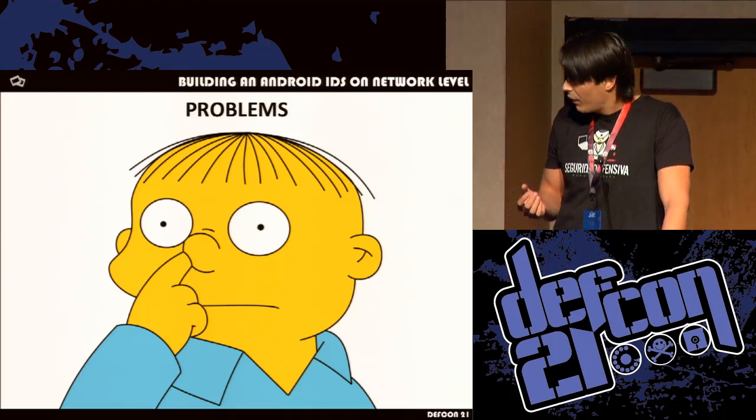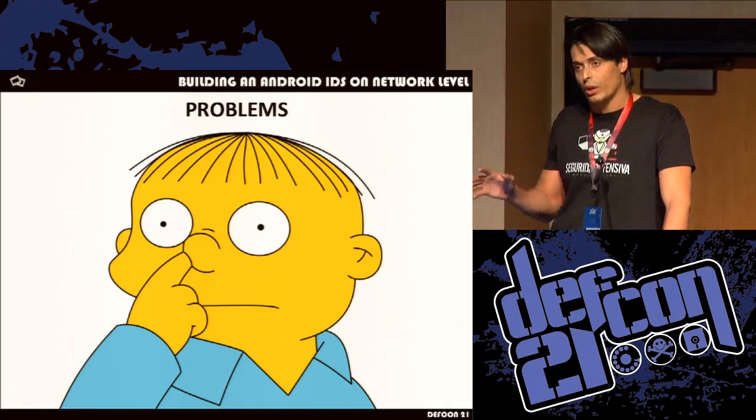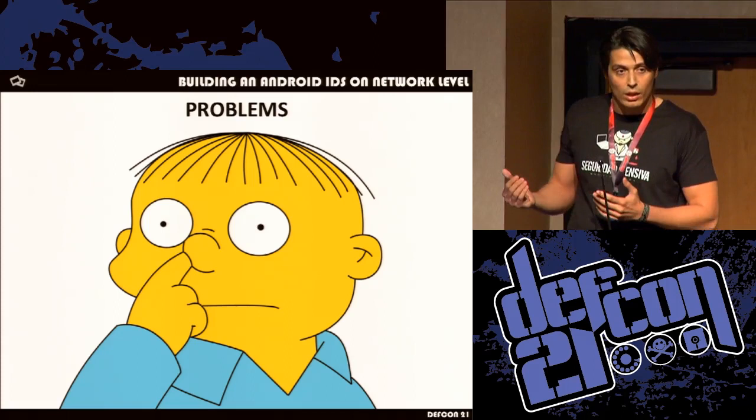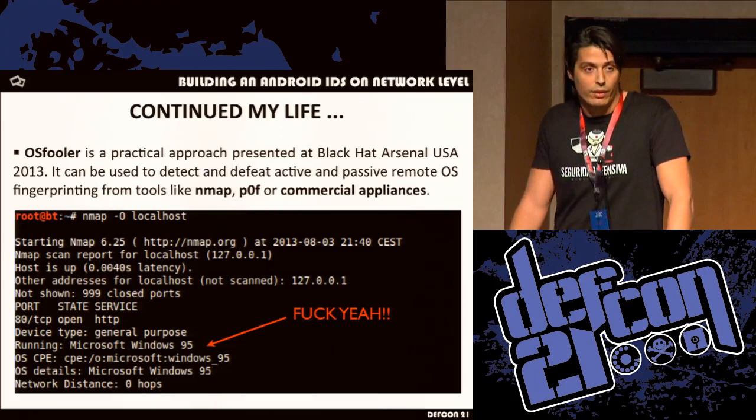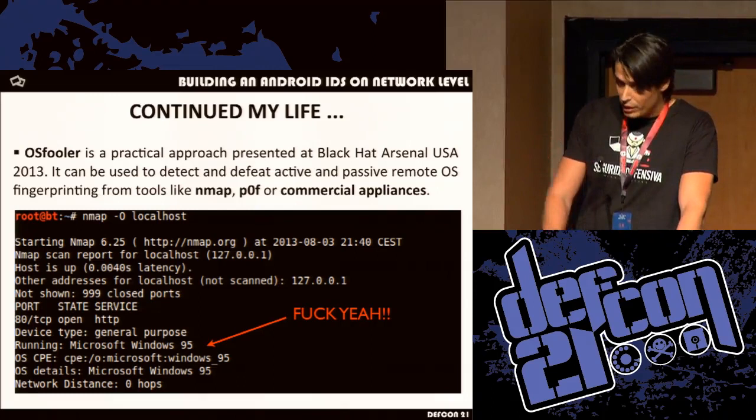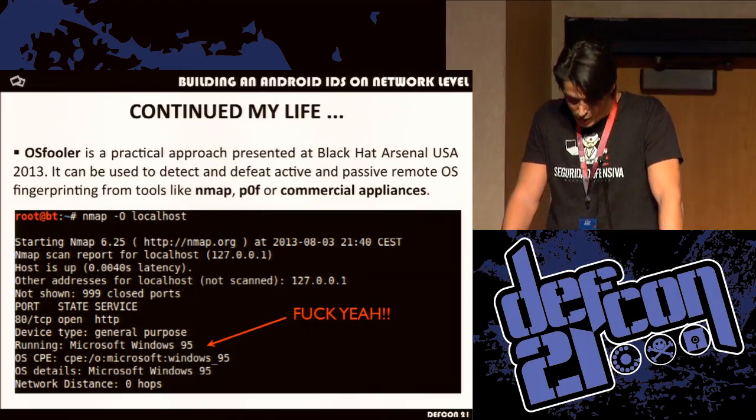There are a lot of signatures for Android, but they are not closely related to Android. We also don't have any real-time notification for the user. So the user doesn't even know if an attack is happening or if they are infected by malware. I continued with my life and made a program called OSFooler — a practical approach to defeat remote fingerprinting, for active and passive fingerprinting — which takes advantage of a special IP tables target called QUEUE. And that's where I came up with the idea of how to solve this problem.